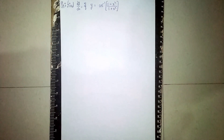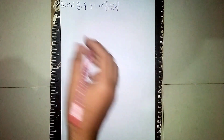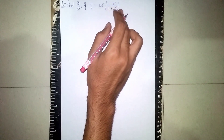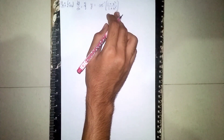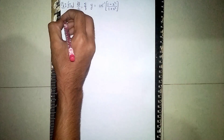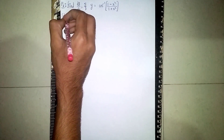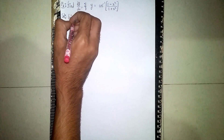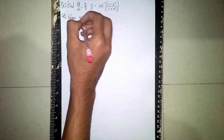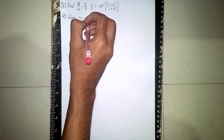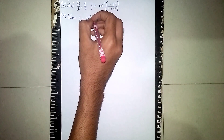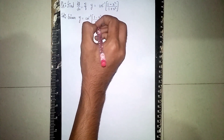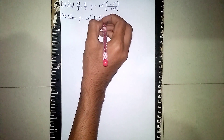Hello, welcome back to my channel. Today's question: find dy/dx if y is equal to cos inverse of (1 minus x square) by (1 plus x square). This is our given question. So for the solution, we write: given y is equal to cos inverse of (1 minus x square) by (1 plus x square).